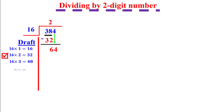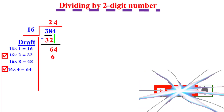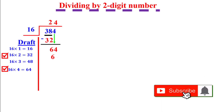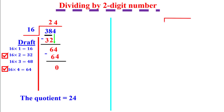Try 4: 4 times 16 equals 64, so we write 4 above the 4. Multiply again: 4 times 16 equals 64. Write a line and subtract — it will be 0. So the quotient is 24. Another example: 3618 divided by 27.